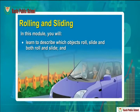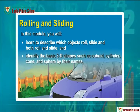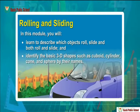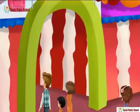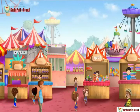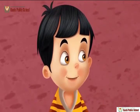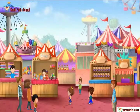Rolling and sliding. In this module you will learn to describe which objects roll, slide, and both roll and slide, and identify the basic 3D shapes such as cuboid, cylinder, cone, and sphere by their names.